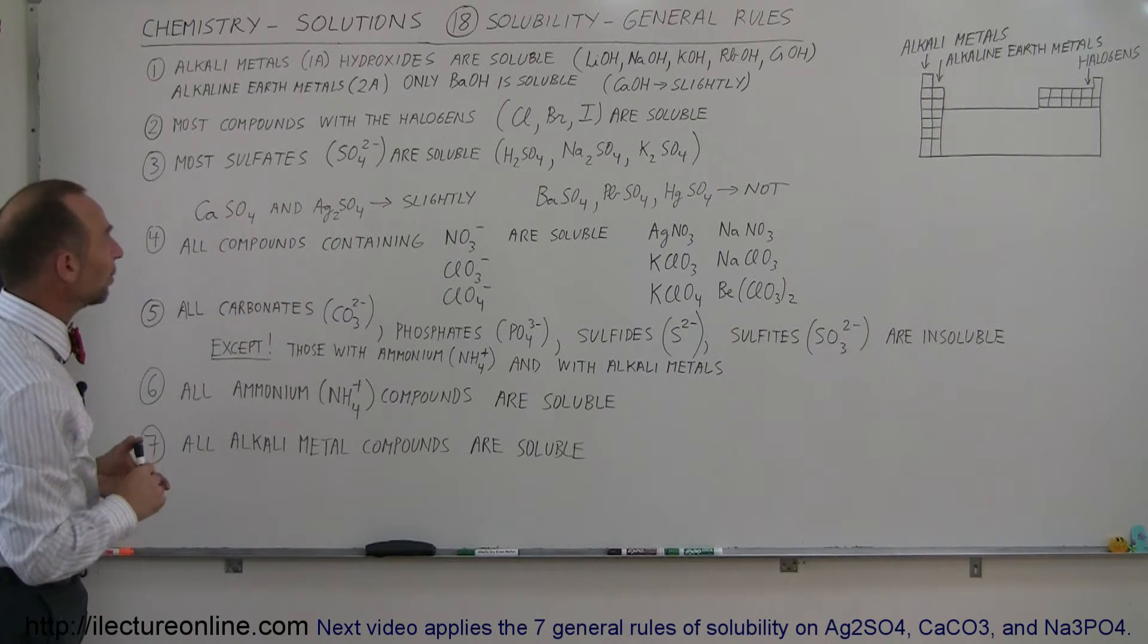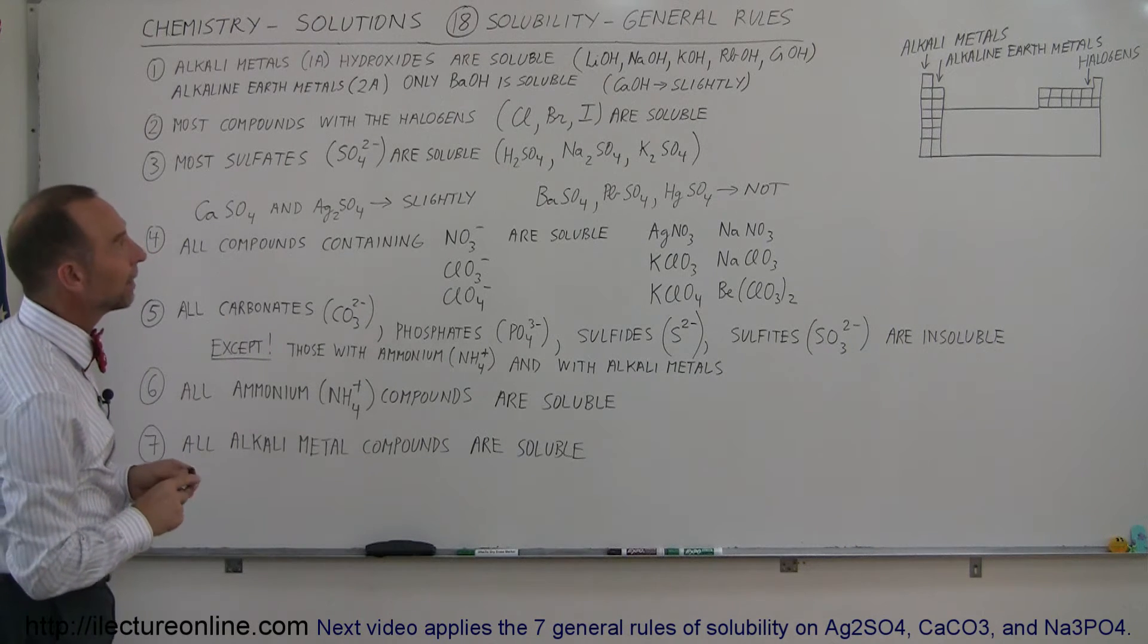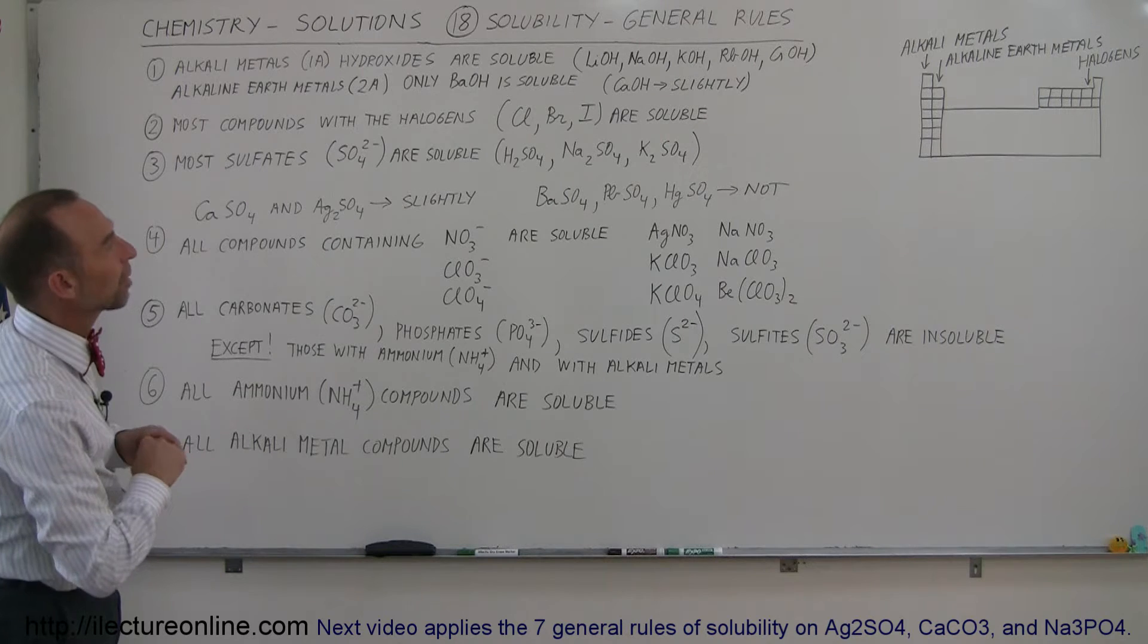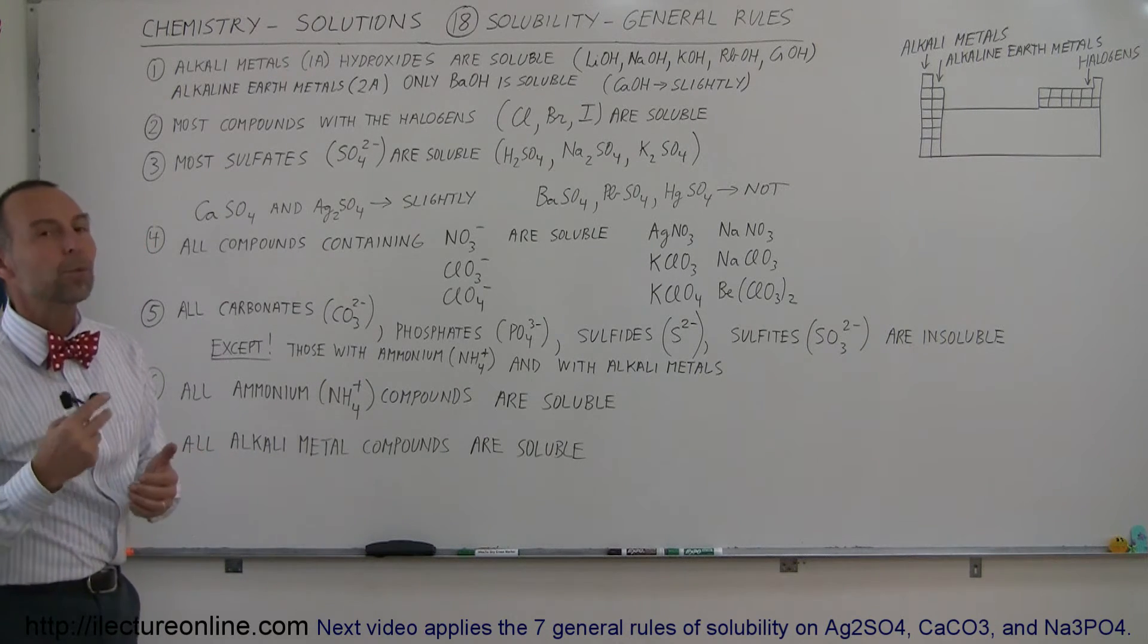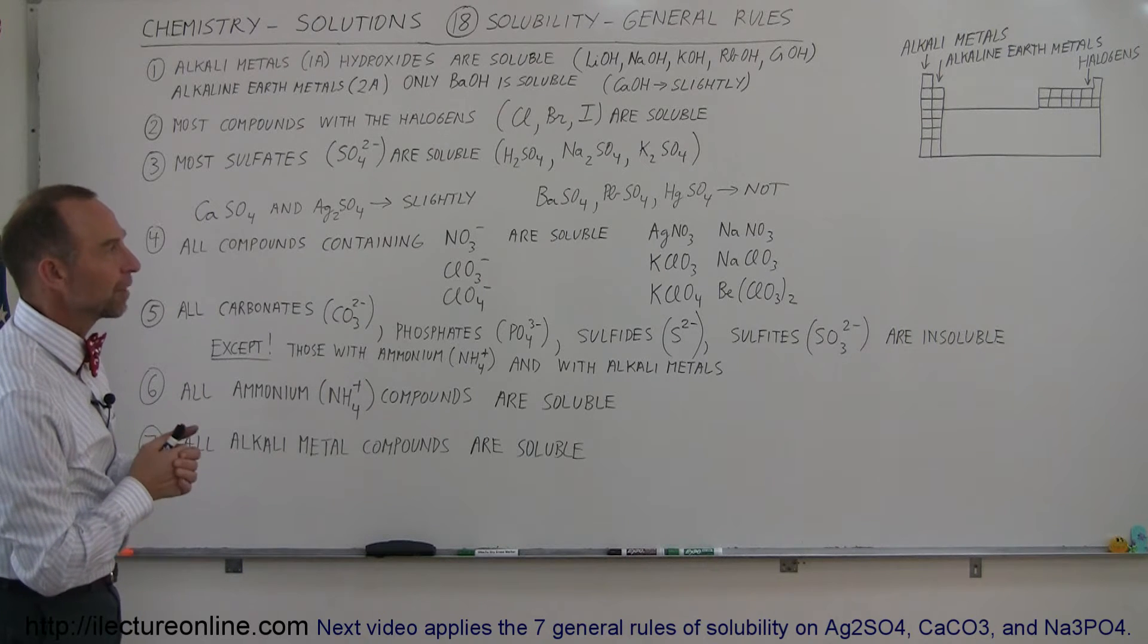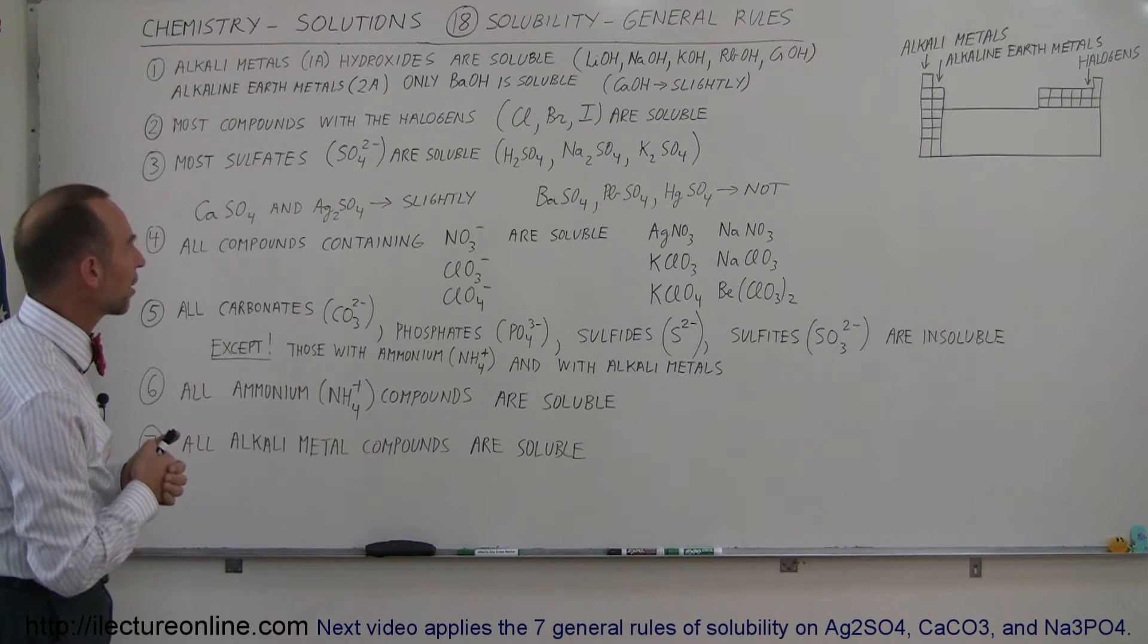The alkaline earth metals, there's only one of those, the barium hydroxide is soluble, and calcium hydroxide is just slightly soluble. So, when we get into the alkaline earth metals, only one of the alkaline earth metals is soluble when it's mixed or when compounded with hydroxide.